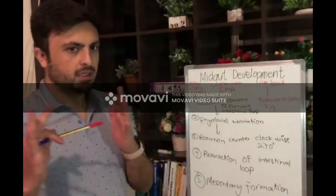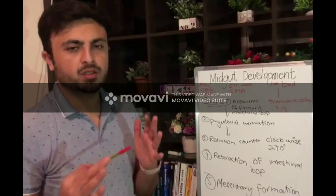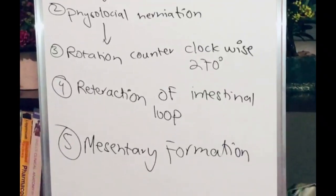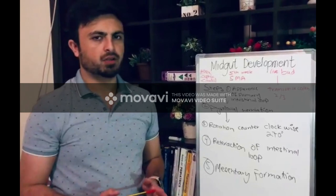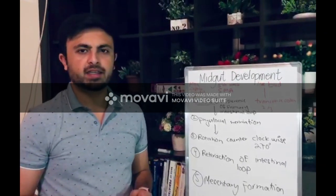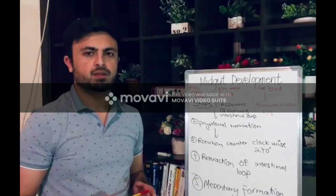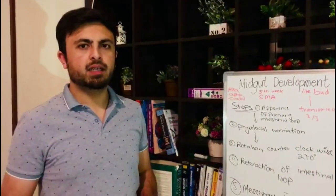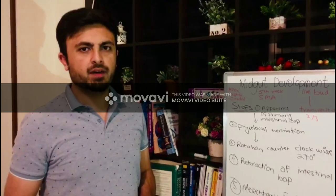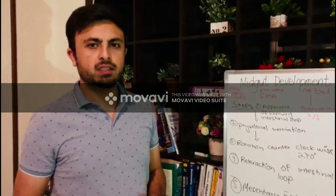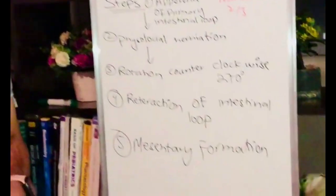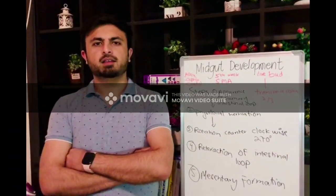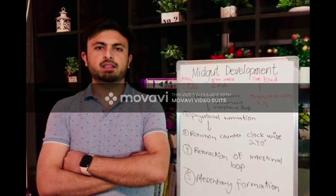The first organ to return from the extra-embryonic cavity to the abdominal cavity is the proximal part of the jejunum, which lies on the left side. Regarding the cecal bud: during the sixth week of development, the cecal bud lies in the upper right quadrant below the right lobe of the liver. After retraction, it settles down in the right iliac fossa. Our last step is mesentery formation — the mesentery provides support to the midgut and connects the midgut to the abdominal walls. Thank you for watching. In the next video, we will discuss the development of the hindgut.